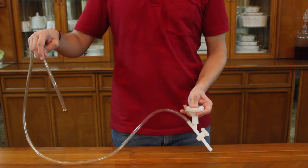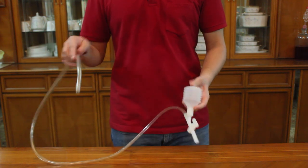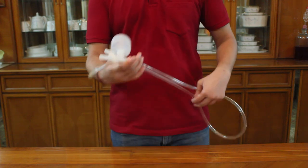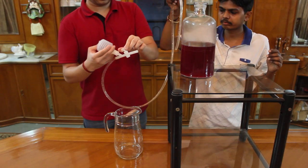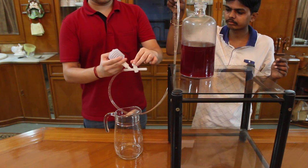Basically, we have to create suction pressure in the upper container so that the tube sucks the liquid into the lower container. For that, we will fully press the pump and then turn the tap off.